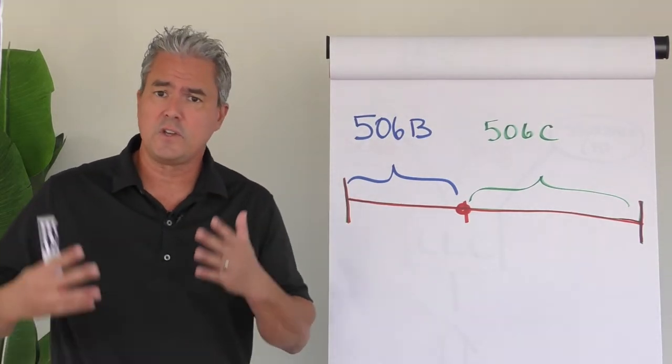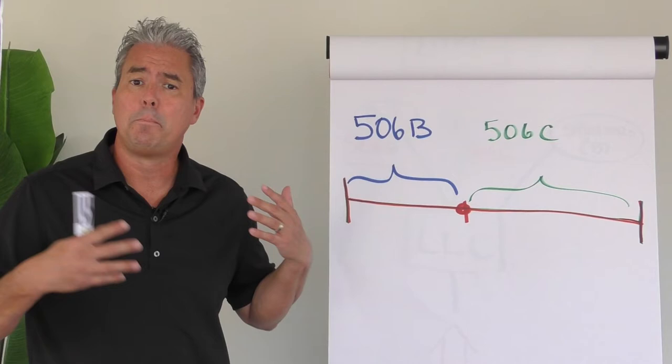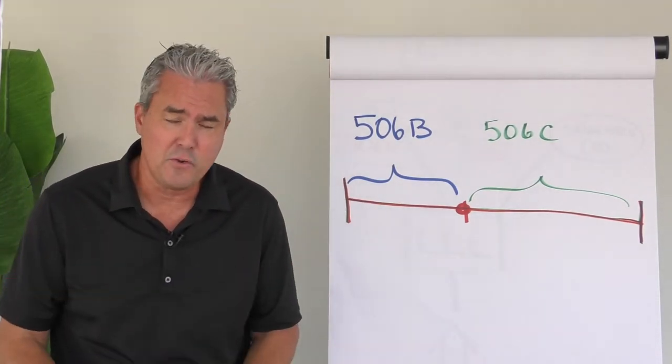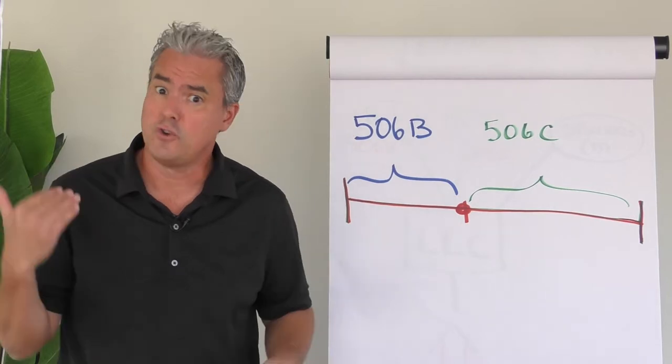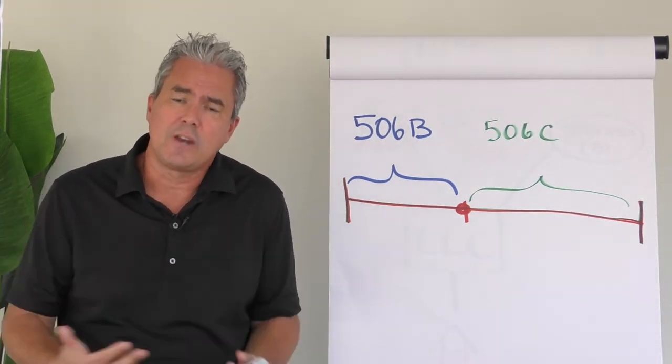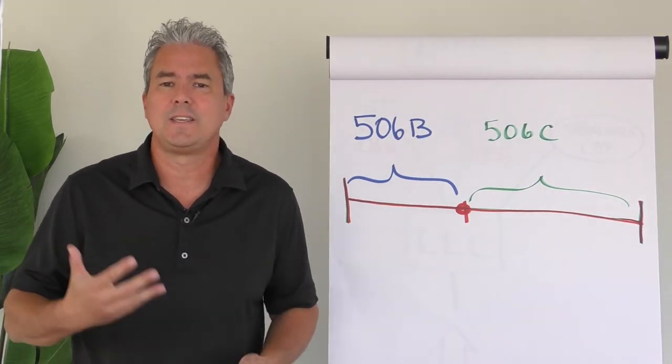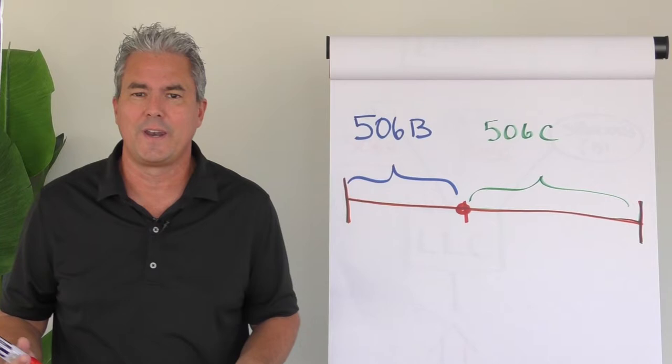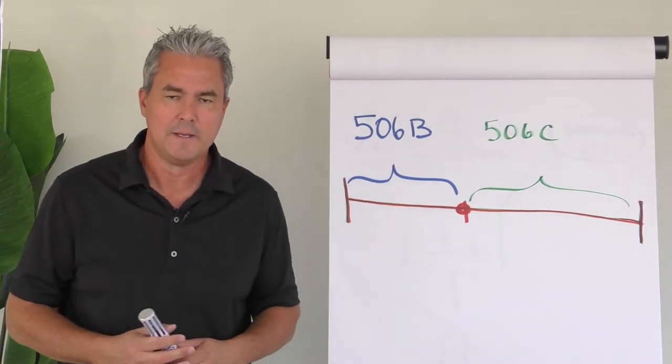You start your offering just like you do now under a 506B, and you comply fully with the terms of 506B, so you can take up to 35 non-accredited investors, there's no advertising, no general soliciting, but you generally have to have a pre-existing substantive relationship with your investors. But you can take up to 35 non-accredited, which is obviously the attractive part of that exemption.